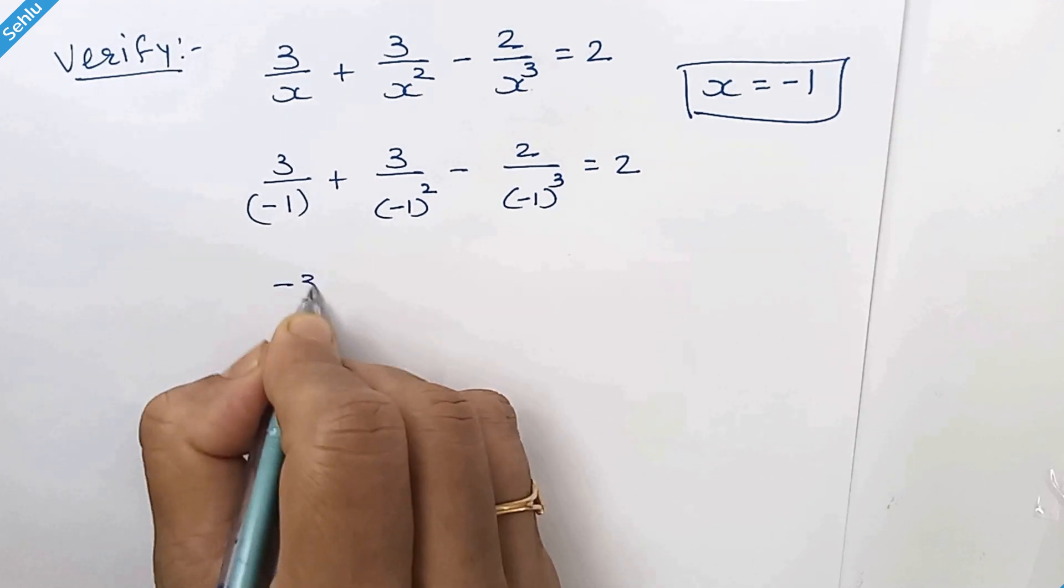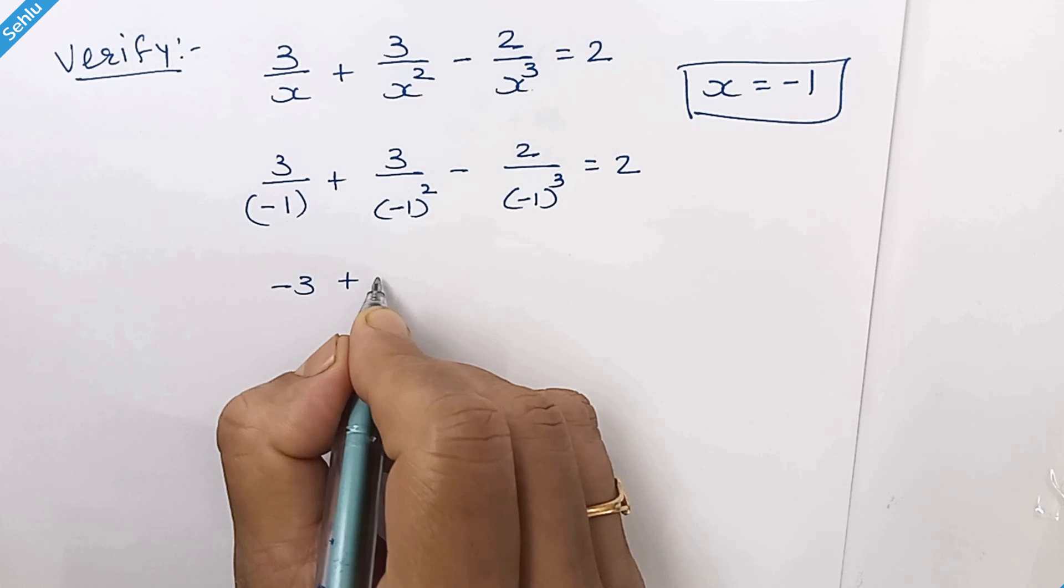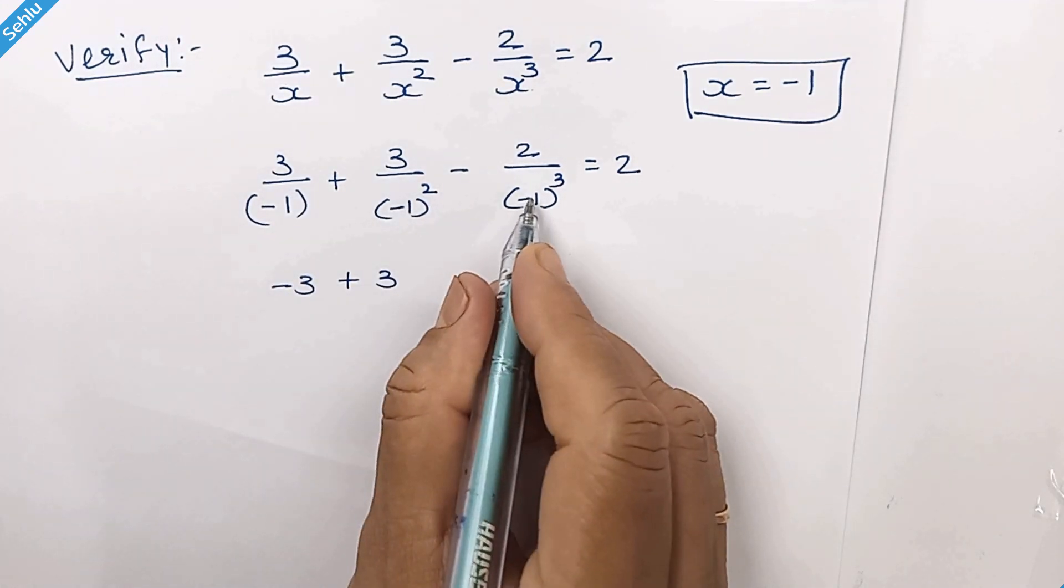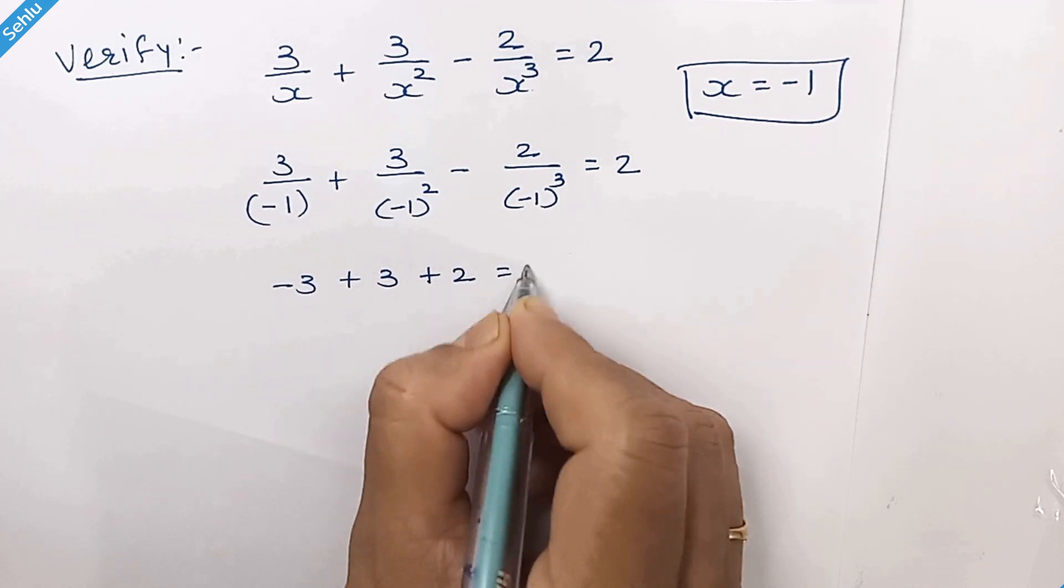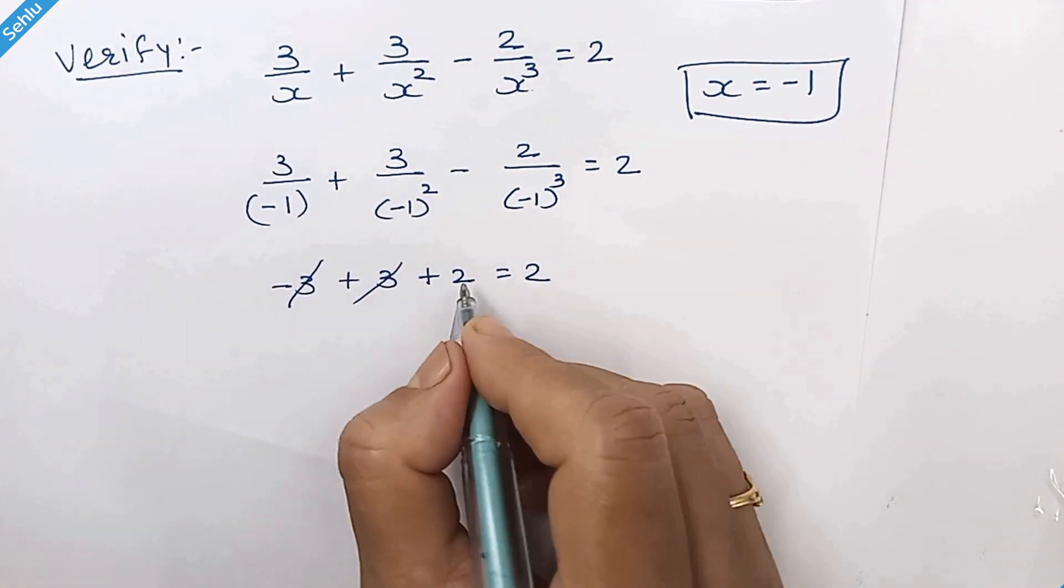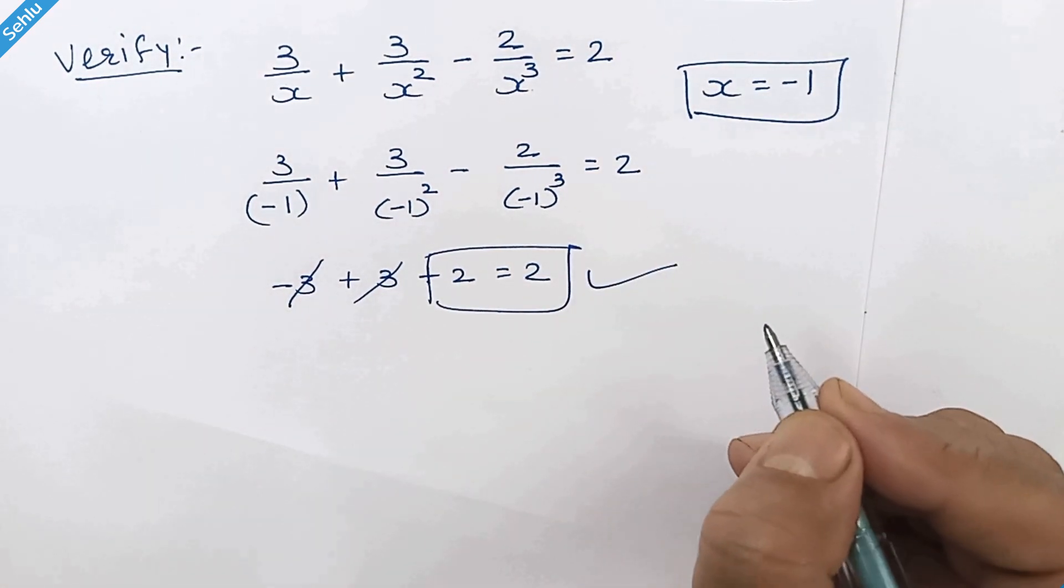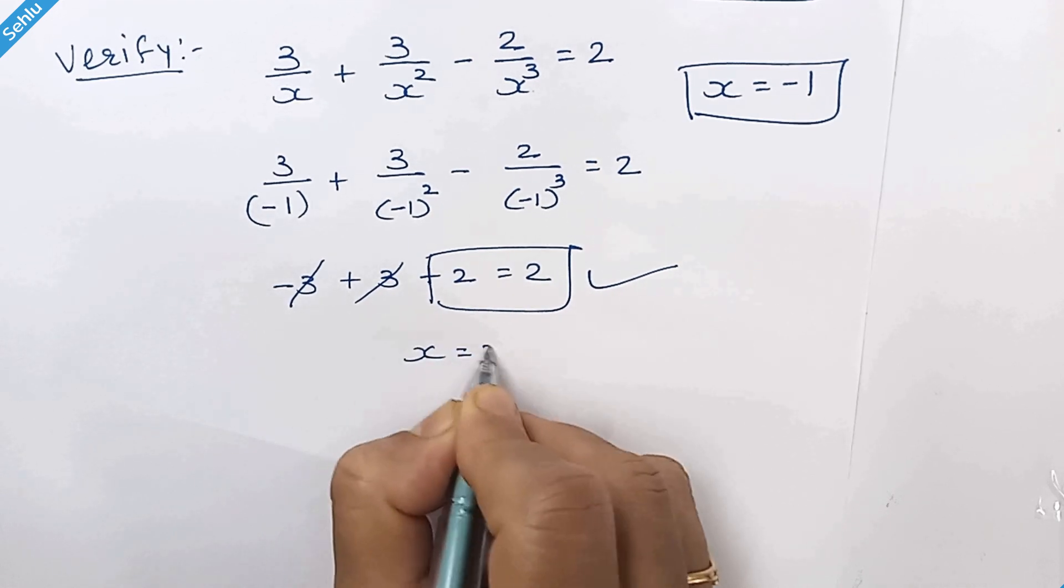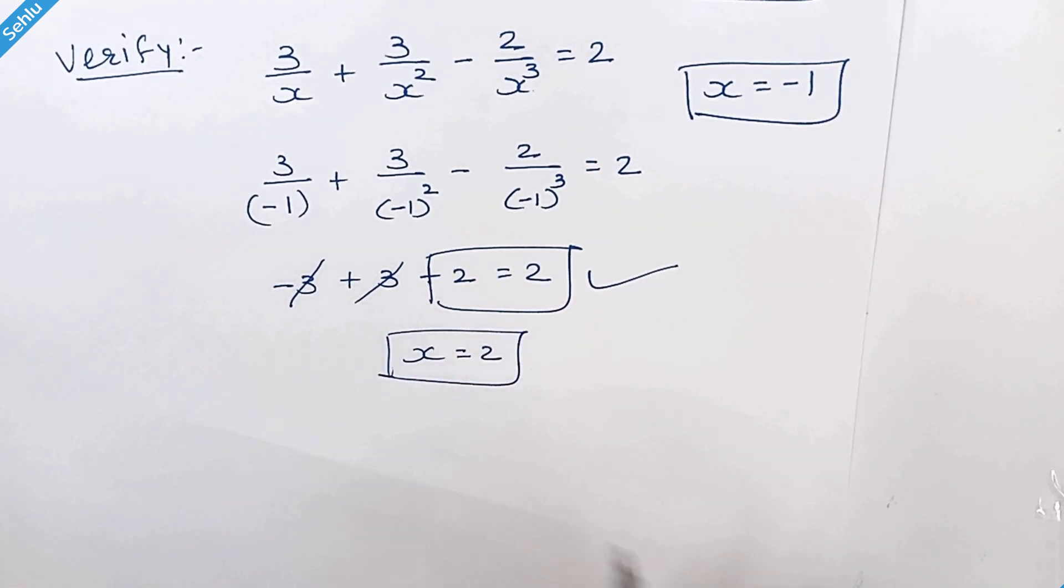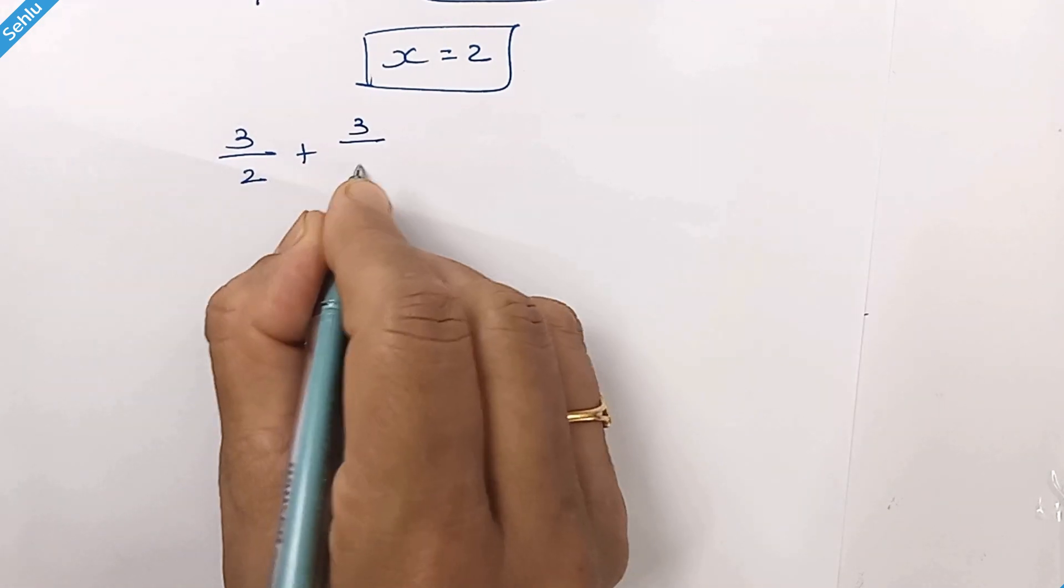So here we have negative 3. Negative negative will be positive. So we have 3 and negative negative will be positive. Let's take x is equal to 2.